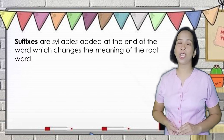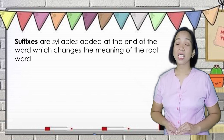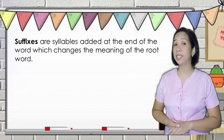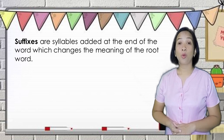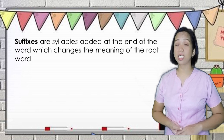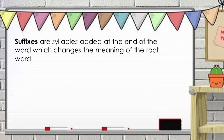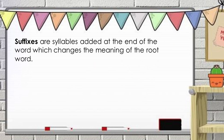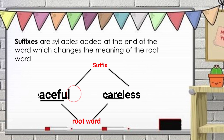Now let's move on to suffixes. Suffixes are syllables added at the end of a word which changes the meaning of the root word. For example, peaceful — the root word is peace and the suffix is ful. Another one is careless — the root word is care and the suffix is less.